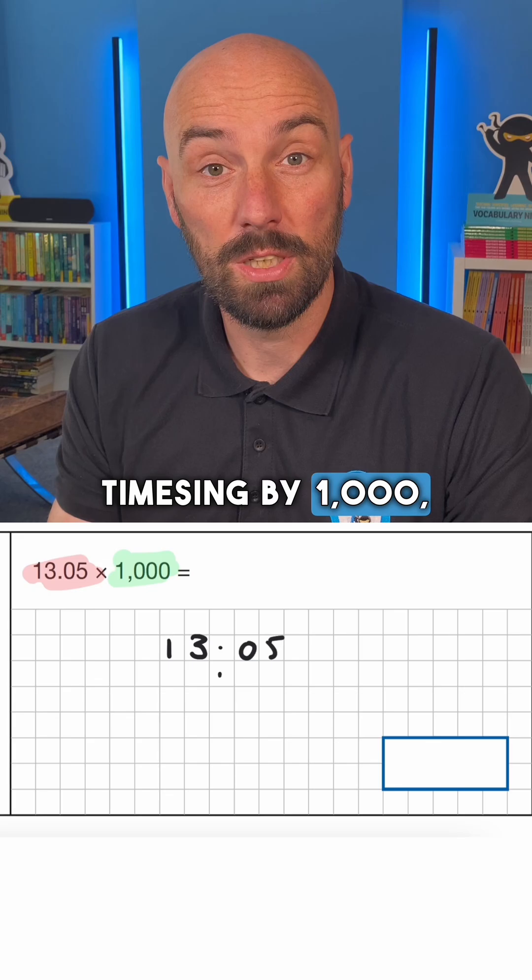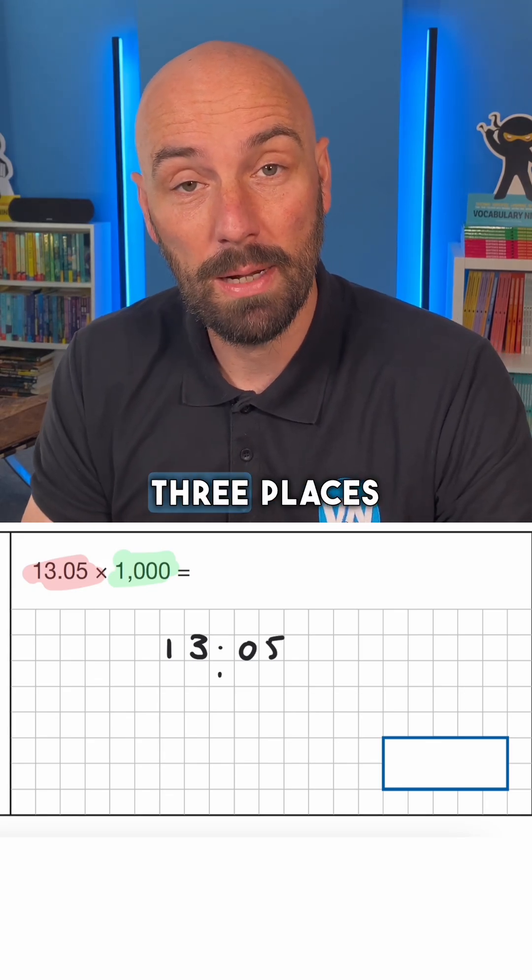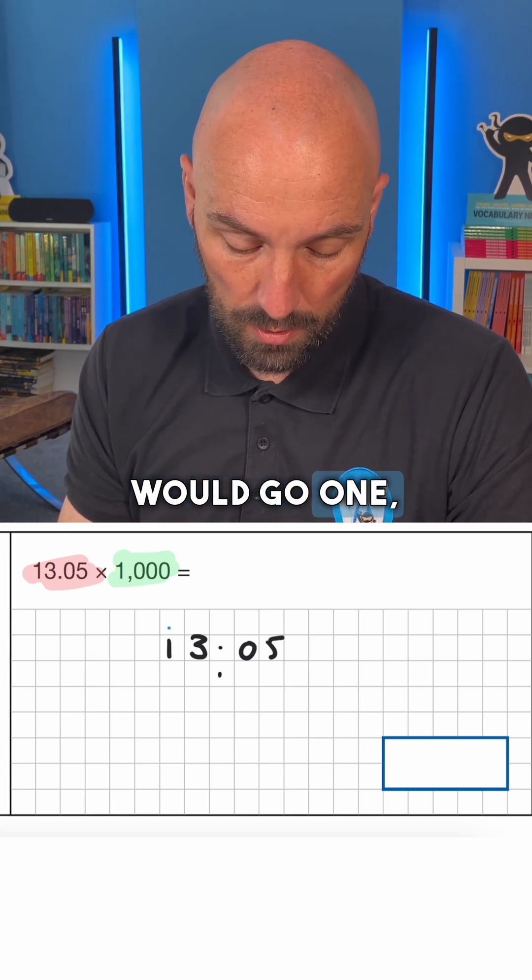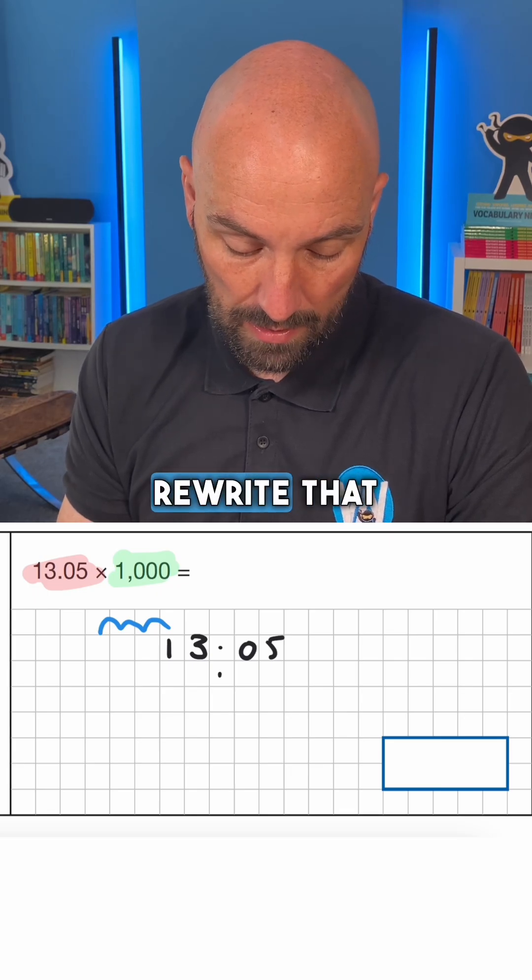We would place another decimal below. This is for the new number that we're creating. Because we're times it by a thousand, every digit is going to move three places to the left and become larger. So the one essentially would go one, two, three.